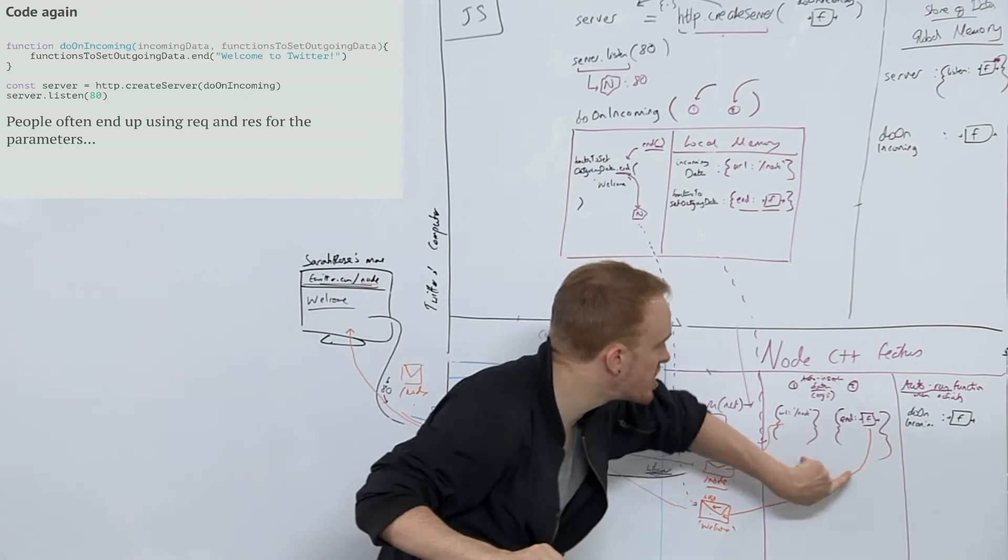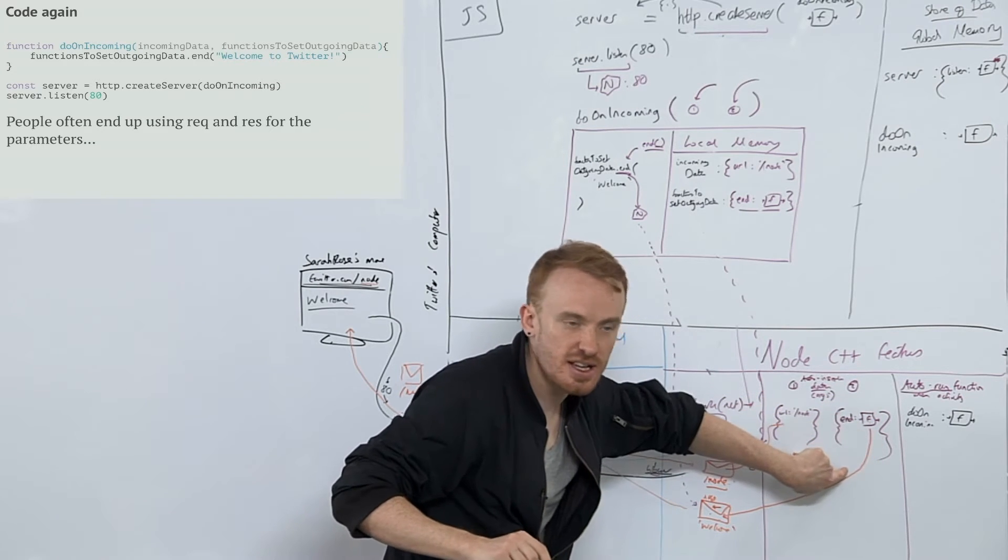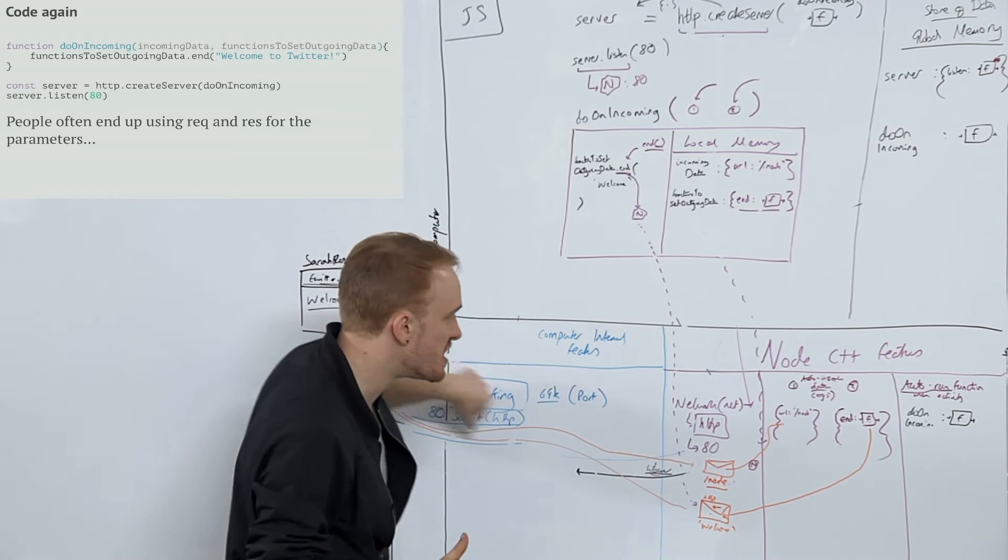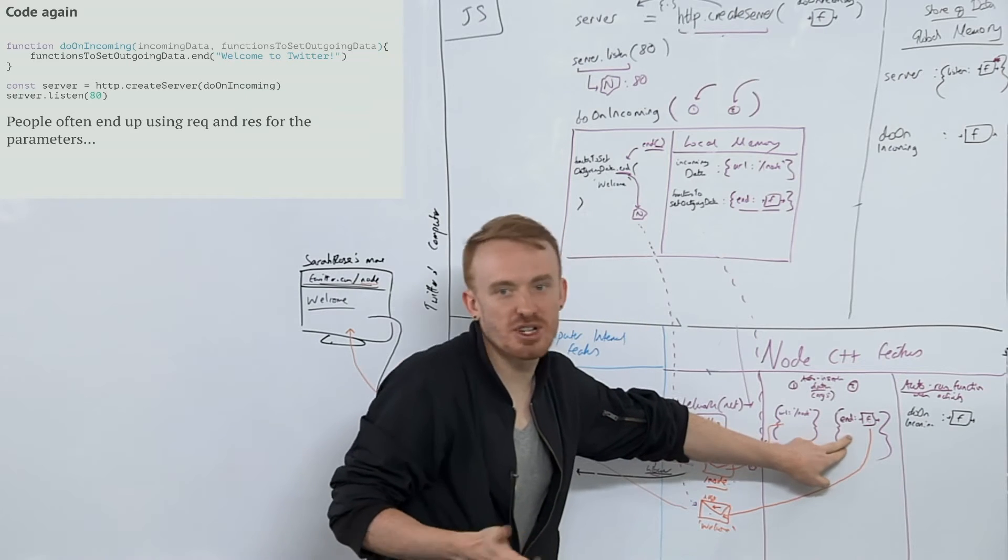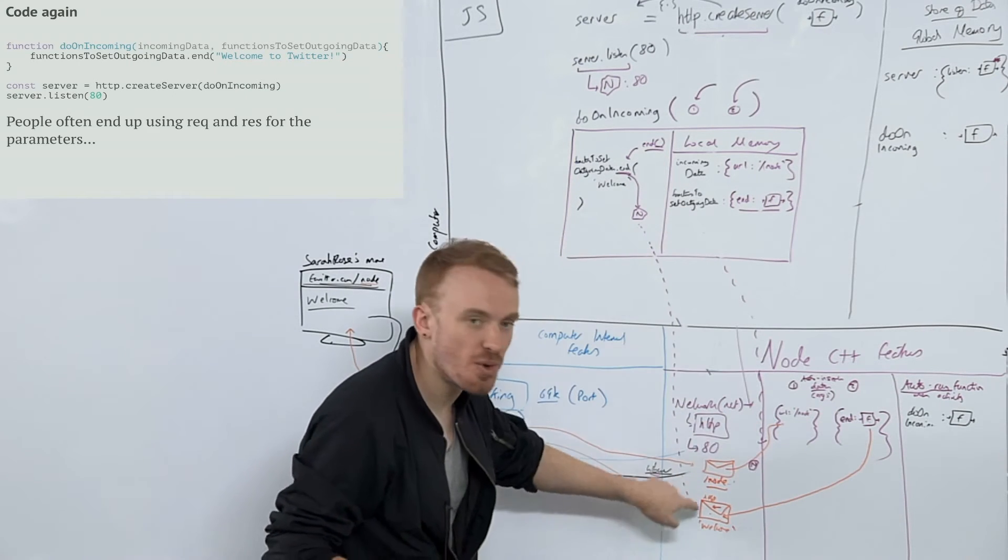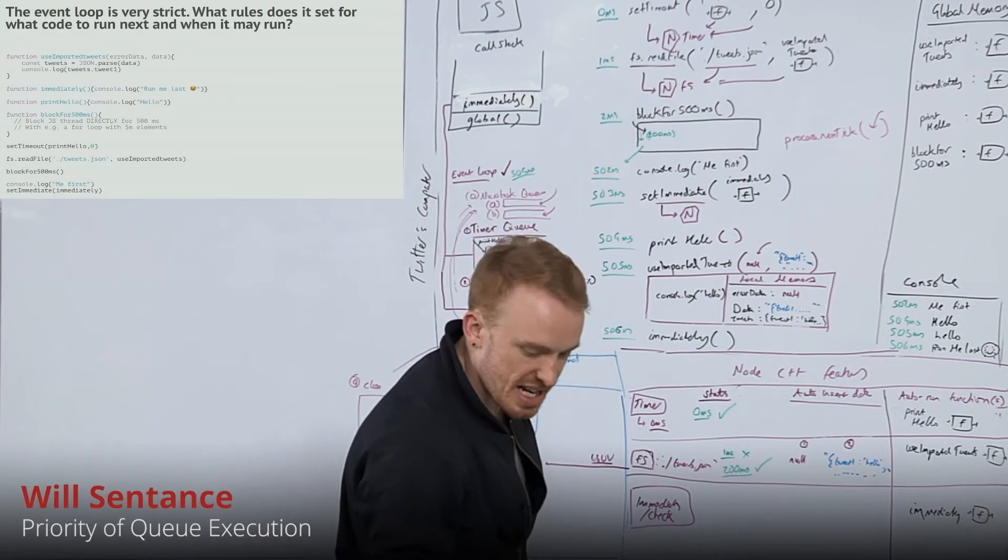We're then going to need to design that function such that it's ready to receive incoming data, functions that set outgoing data, ready to receive the auto-created and auto-inserted data that's relevant. In this case, it's the input data or Sarah Rose's request data and a bunch of functions that allow us to access Node again with specific responses to send back to Sarah Rose. All right, people, let's sum it up.